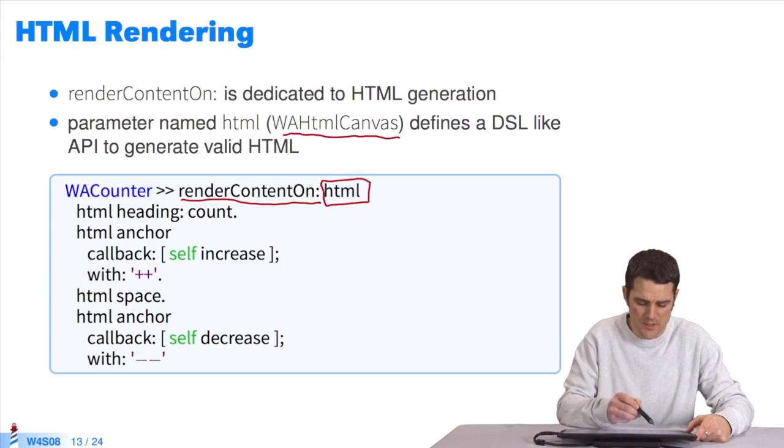I send messages to this object to generate the HTML code, a heading and an anchor or link. The callback message enables me to specify a block of code to execute when I click on the link. Here, when I click on the link called plus plus,